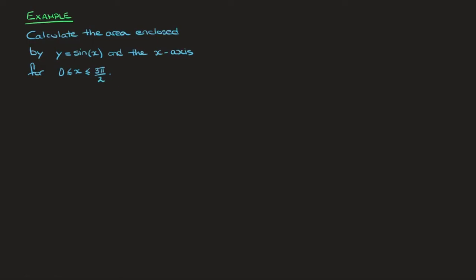Hi everyone. In this tutorial we learn how to use integrals and integration to calculate the area enclosed by a curve and the x-axis between two values of x. We're going to work through the example where we calculate the area enclosed by y equals sine of x and the x-axis for x-values between 0 and 3 pi over 2.